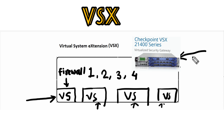For example, say packet 1 is destined for a particular virtual system. This VSX gateway will send that packet there, and from there this virtual system will process that packet and route it to the destination where it actually wanted to go. The virtual system inspects all traffic and allows or rejects it according to the rules defined in the security policies.